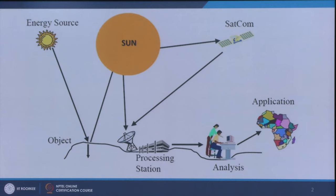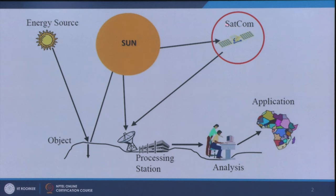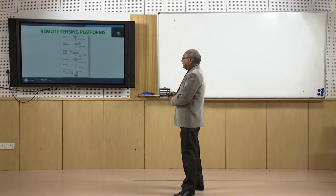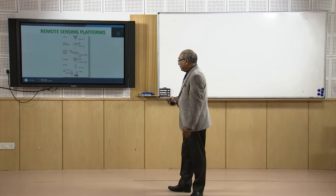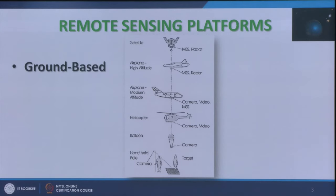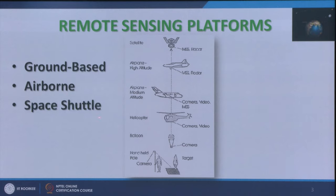As we have already seen, there is an energy source, then there is earth surface or objects, then the sun is there, then satellite is there and so on. The main topic we are going to discuss is the different satellites. For remote sensing, you need not go into space — even remaining on the ground that can be done. So there is ground-based remote sensing. Then airborne remote sensing can be through shuttle missions, and remote sensing can be spaceborne or through satellites as well.